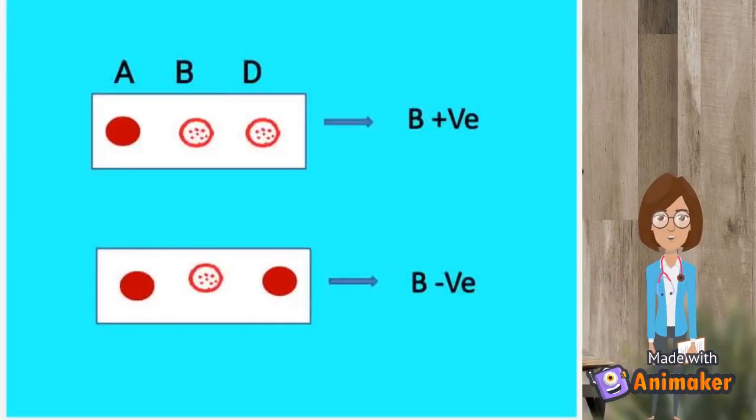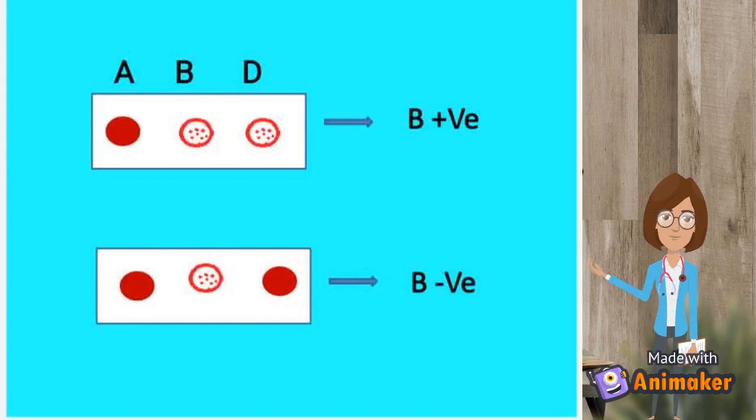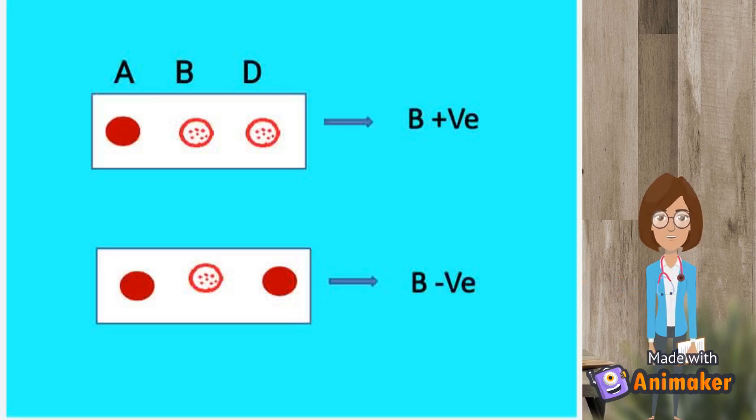Here in the first one, clumping is seen in B and D, so it is B positive. In the second one, clumping is there in only B, suggesting it as B negative.